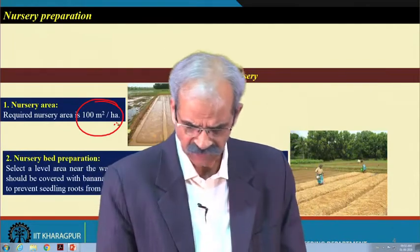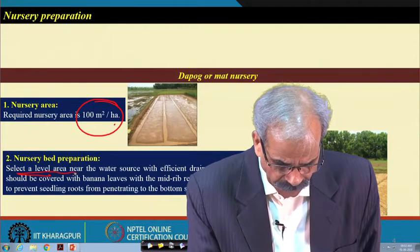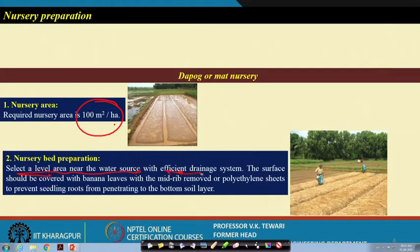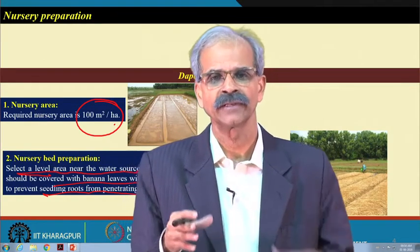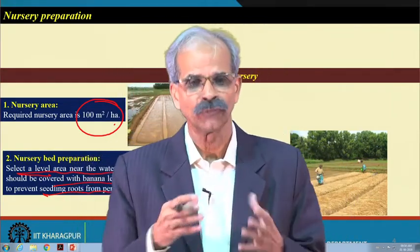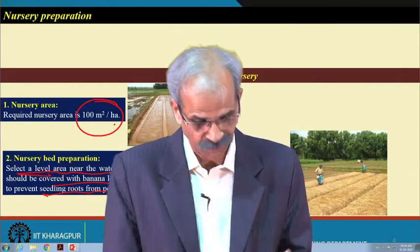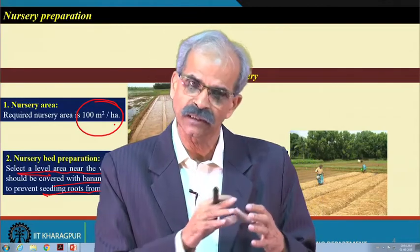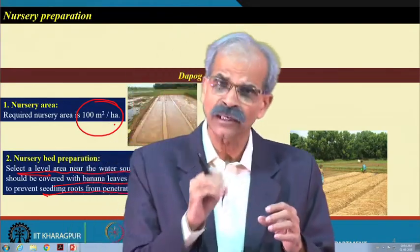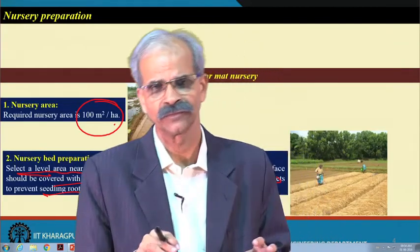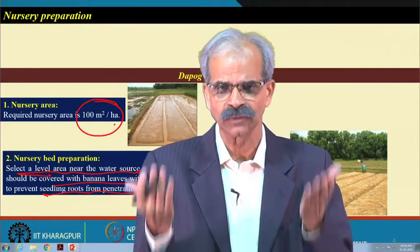There are aspects of bed preparation explained here. Select a level area near the water source with sufficient drainage. The surface should be covered with banana leaves with the need removed, or polyethylene, to prevent seedling roots from penetrating through the bottom soil layer. Farmers have developed various methodologies. Some level of organic fertilizer may also be given so that the seedlings are grown in time.